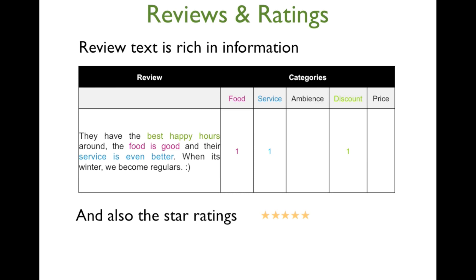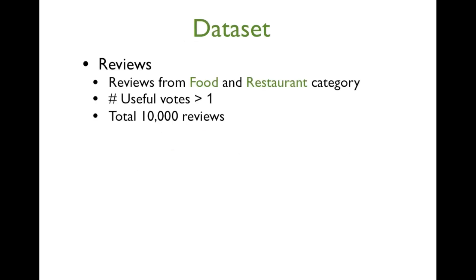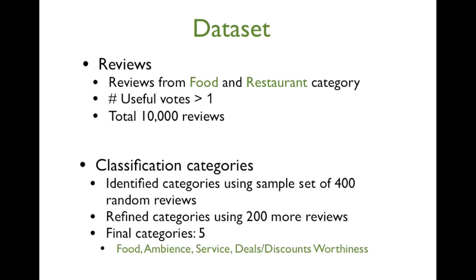Just like in any machine learning problem, we needed a dataset to build our classifier. We selected all the reviews which were in the restaurant and food category and had at least one useful vote. From this pool of reviews, we then randomly chose 10,000 reviews. We identified what categories to include by looking at a random sample of 400 reviews and then defined and validated these categories on a second sample of 200 reviews.